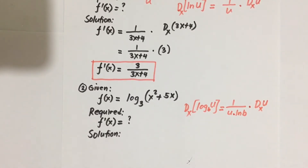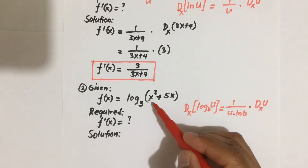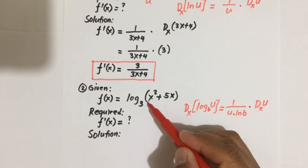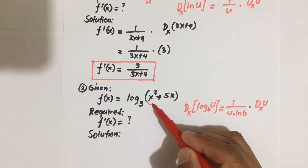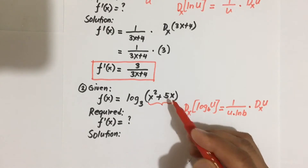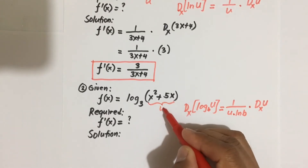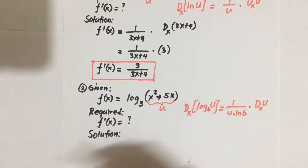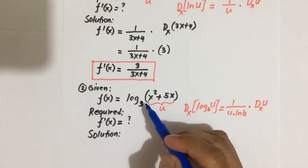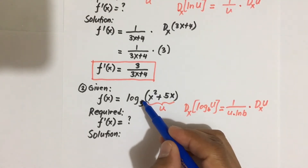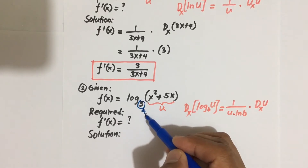Now it is a matter of identifying what our u is. In this case, u is the quantity inside the logarithm — that is x squared plus 5x. And b, the base, is equal to 3.